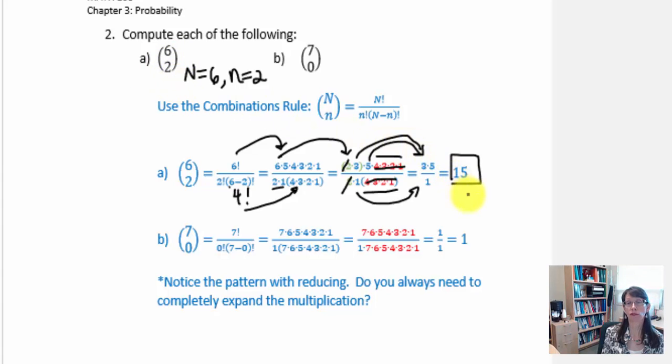In the next example, 7, 0. We are looking for how many combinations of 0 can be made with a total of 7 elements. Well 7 factorial will be divided by 0 factorial multiplied by 7 minus 0 factorial.